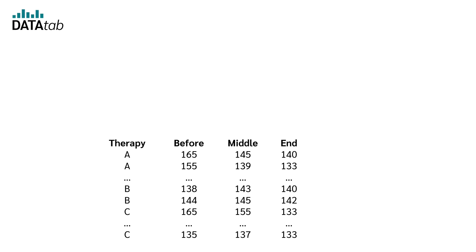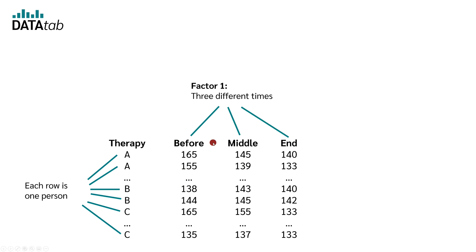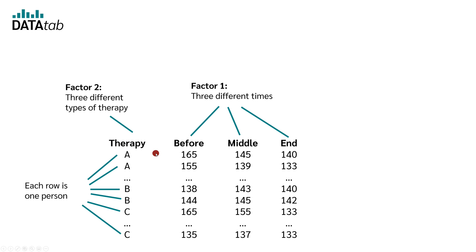Now let's look at an example. Each row in our data is one person. The first factor has three time points: before the therapy, in the middle, and at the end of the therapy. The second factor indicates which therapy was used — therapy A, B, or C. For example, the first patient received therapy A, had a blood pressure of 165 before therapy, 145 in the middle, and 140 at the end.